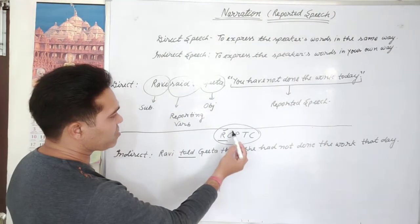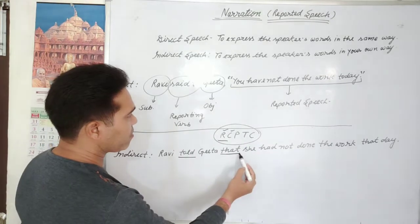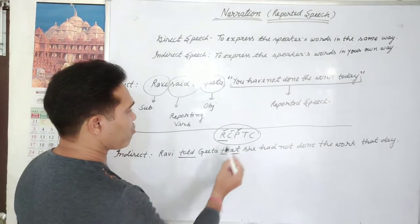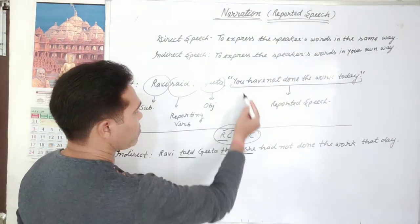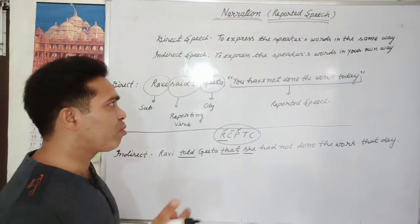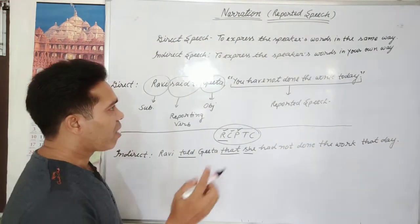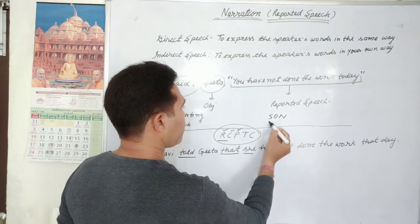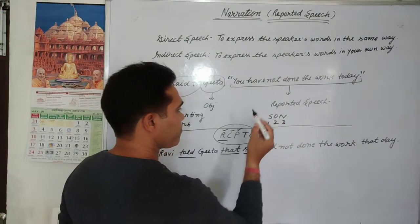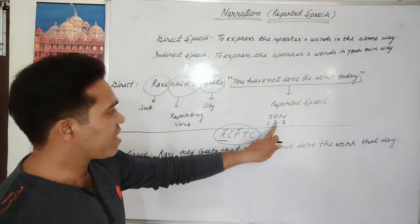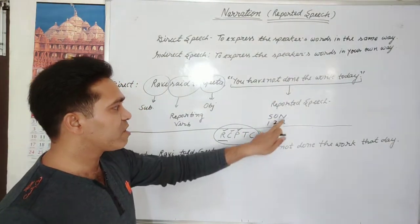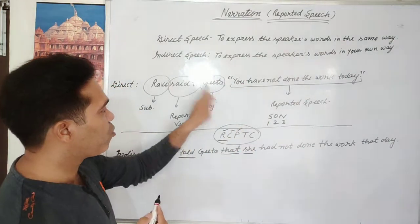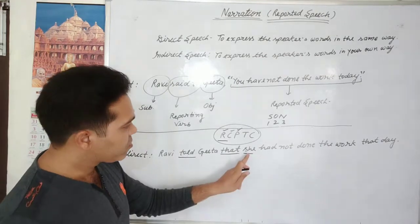Then C for conjunction — we use 'that'. Next, P for pronoun: 'you' is a pronoun and we have to change it. The rule is S, O, M — first person according to subject, second person according to object, third person no change. So 'you' is second person, changed according to object. Object is Gita, who is female — that's why 'she'.